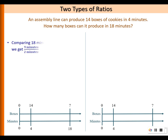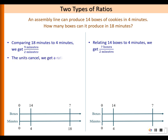There are two types of ratio. One is to compare 18 minutes to 4 minutes, and then we get a ratio of 9 is to 2. The other type is to relate 14 boxes to 4 minutes — we get a ratio of 7 boxes is to 2 minutes. For the first type, the minutes and minutes cancel, so essentially we get a ratio of 4.5 is to 1 without any units.